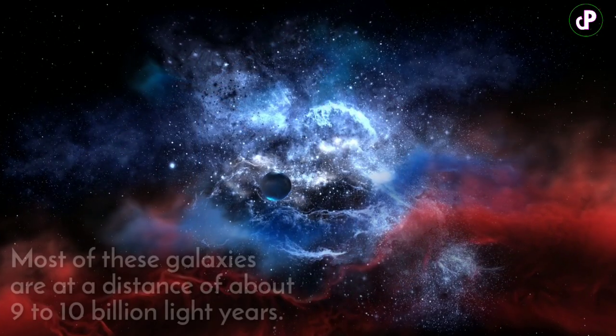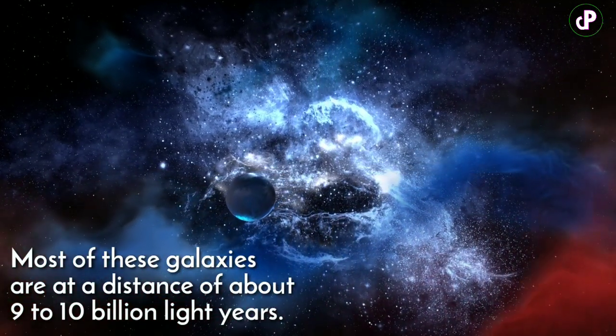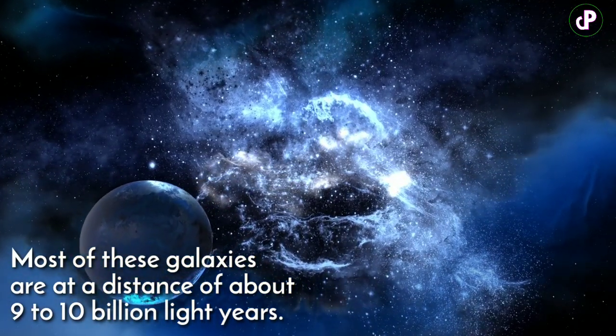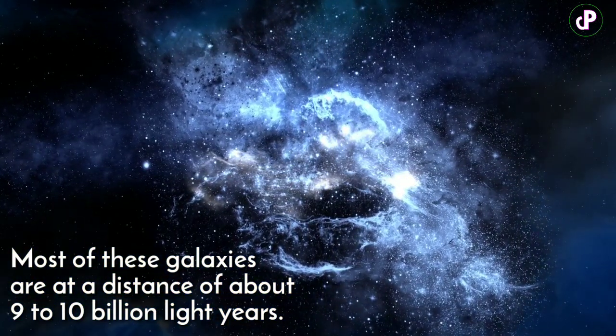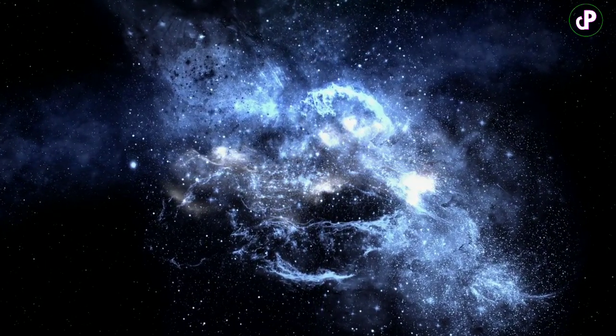The light coming from these farther galaxies has traveled about 9 to 10 billion years to reach James Webb's lenses. So we are looking at about 9 to 10 billion years back in time. The James Webb is working like a time machine for us.